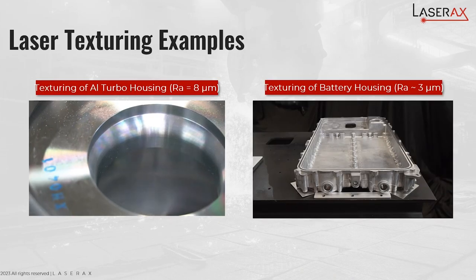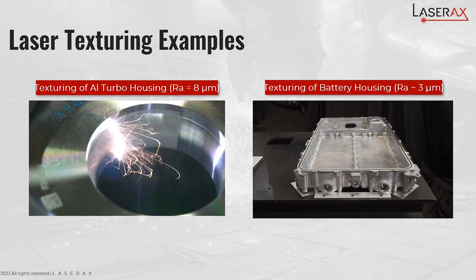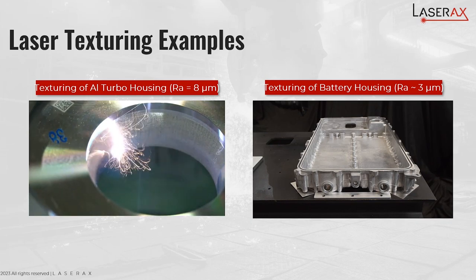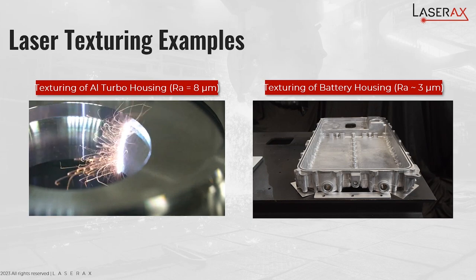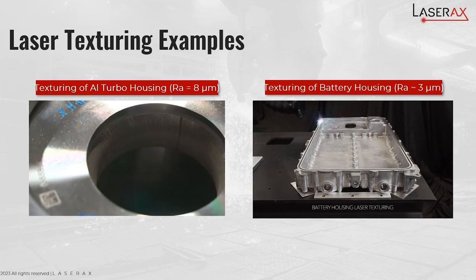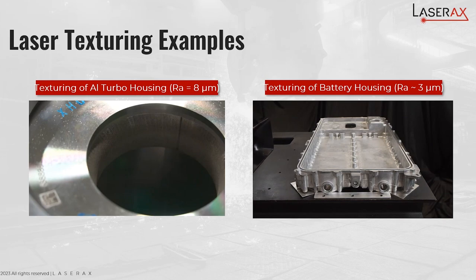Here are two examples of laser texturing that we perform at LaserAxe — these videos are available on our YouTube page. To the left, you can see a texturing of an aluminum turbo housing generating a roughness of 8 microns, prior to thermal spray coating. To the right, you can see a texturing of a battery housing with a roughness of about 2 microns for adhesive bonding. Two very good applications that we are excited to share with our customers. This concludes this webinar — thank you everyone for participating. If you have any questions, feel free to write them below, and if you have interesting applications you'd like to discuss, feel free to reach out to us at LaserAxe and we'll be happy to help.